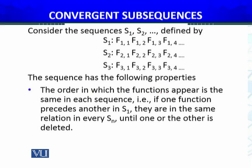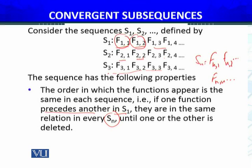(3) The order in which the functions appear, F1, F2, and so forth, in each sequence is the same. That is, if one function precedes another in S1, they are in the same relation in every Sn. This means that if one function precedes another, for example F1,2 precedes F1,3, then in the corresponding sequences, the F2,4 corresponding to it will always precede the one corresponding to F2,3. You can see that this sub-proceeding is true.